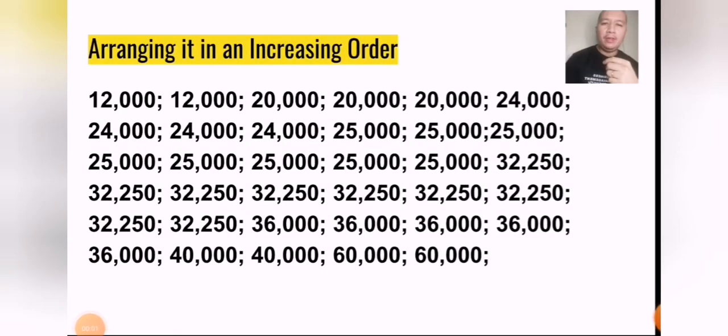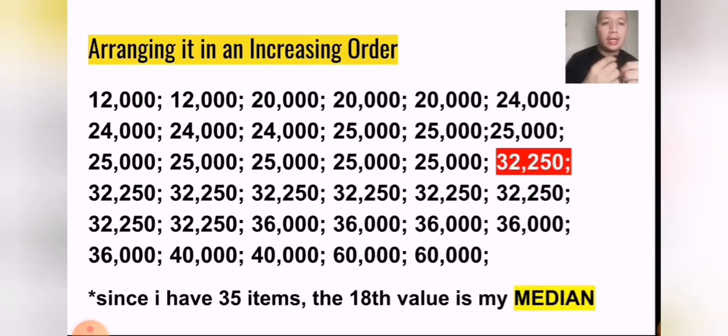Given the set of data that we have, we can see that it is already arranged in an increasing or ascending order. Let's say that these numbers are actually salaries of 35 families starting from 12,000 as the lowest and then 60,000 as the highest. Pinakamababa yung 12,000, mataas yung 60,000 as their salaries.